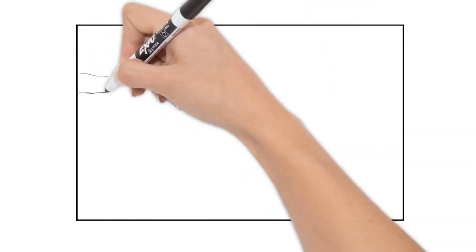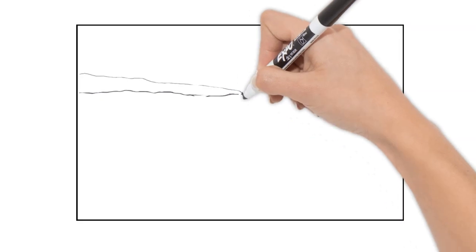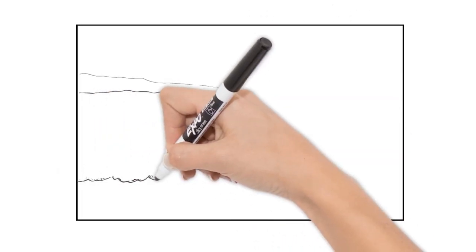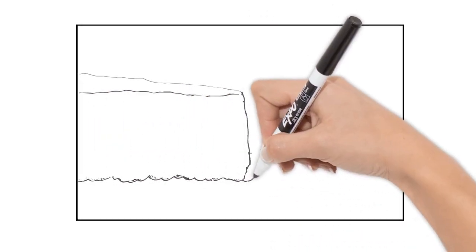So we're going to start by drawing a headland, a piece of rock extending out into the sea. And just to show us the sea, we'll put a few waves in the bottom.